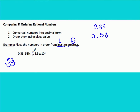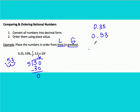The next number listed is 3 fifths. If you forget how to convert, do your long division: 5 goes into 3.0 six times, and 30 minus 30 is 0, so 0.6 is our decimal form here.